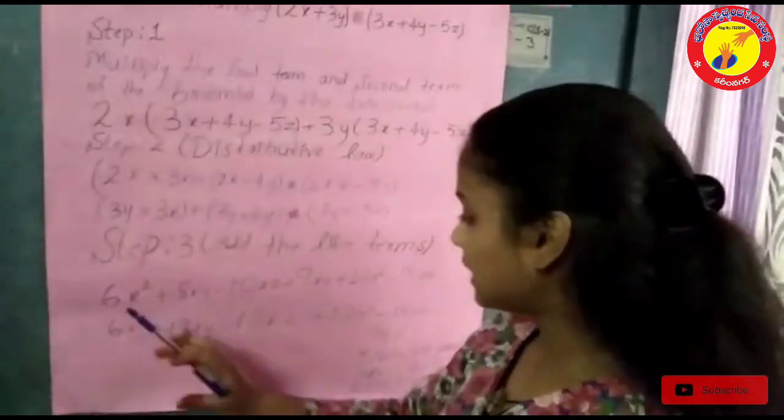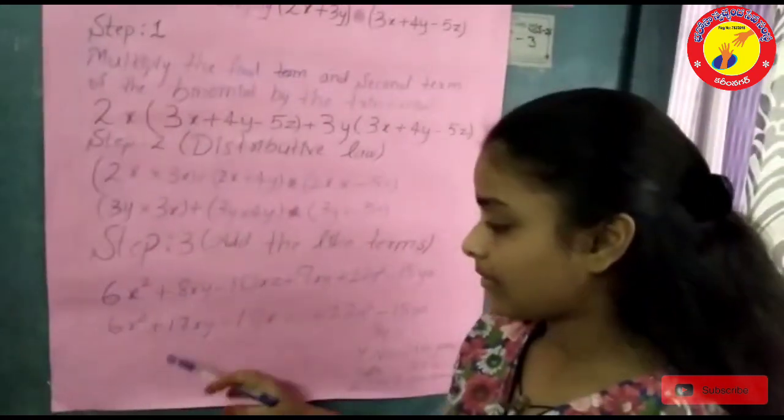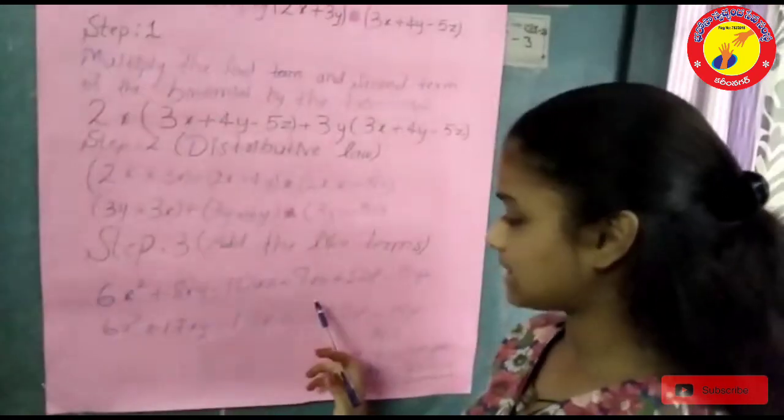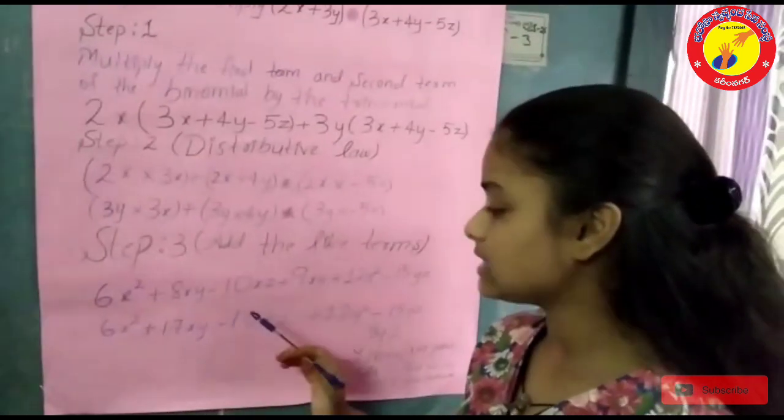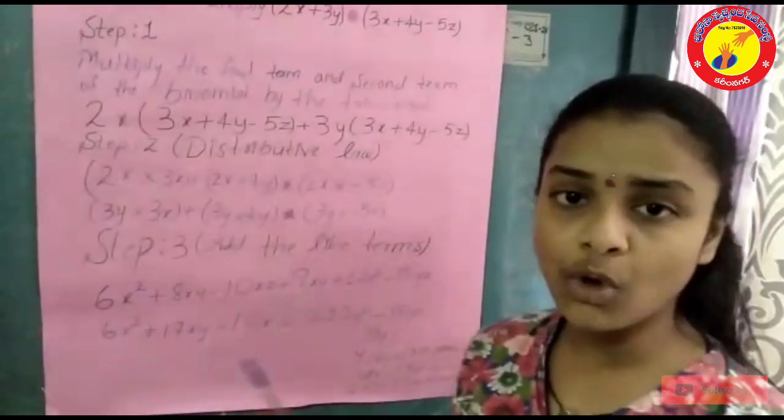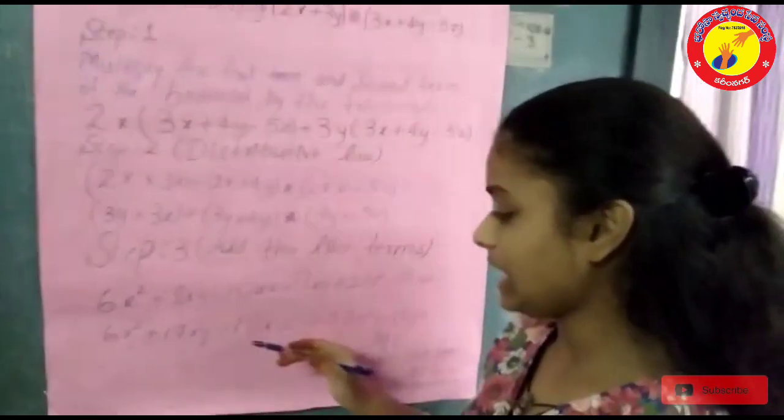And here we add the like terms: 6x squared plus 8xy plus 9xy equals 17xy minus 10xz. There is no other xz term here, so we have to write it as is.